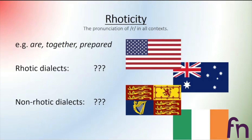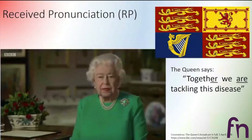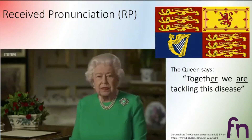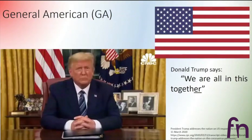In rhotic dialects, the words would be 'R', 'together', 'prepared', and in non-rhotic dialects it would sound more like 'together', 'prepared' — without the R. Let's hear our first native speaker. Here the Queen says: 'Together we are tackling this disease.' This is RP. Let's pay attention to the R's in 'together' and 'are'. As you can probably hear, she says 'together' and 'are' without the R, so RP is a non-rhotic dialect.